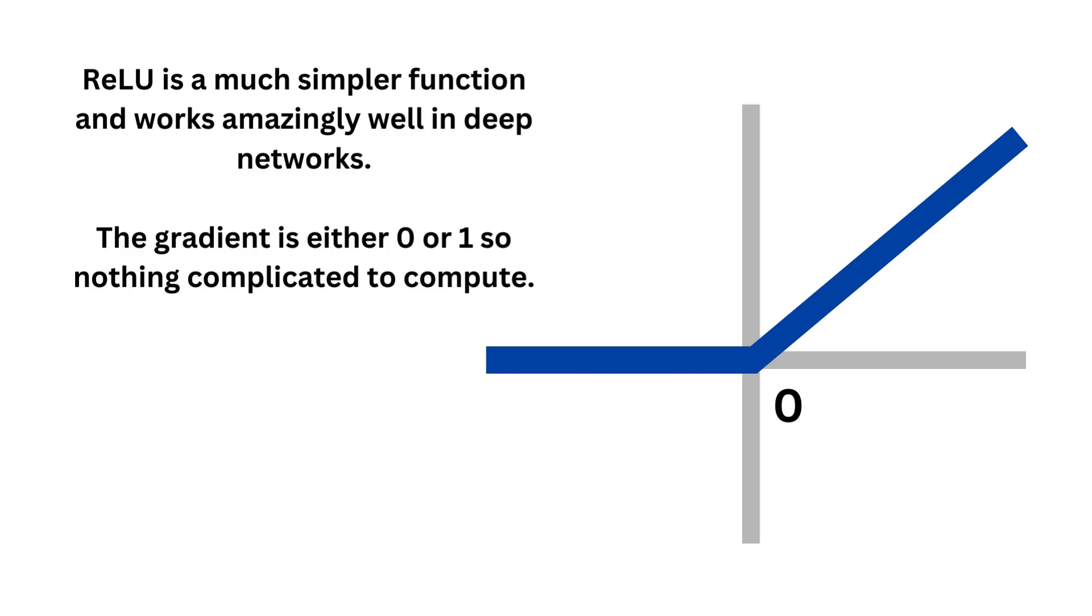Relu is a much simpler function and works amazingly well in deep networks. The gradient is either 0 or 1, so nothing complicated to compute here.